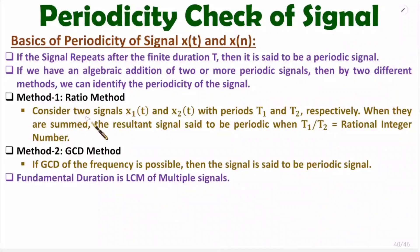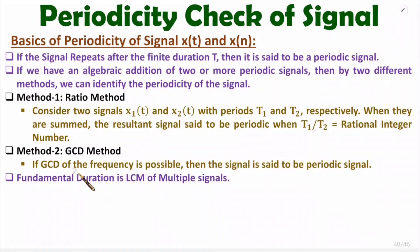Let us consider we have two periodic signals x1(t) and x2(t), where x1(t) has duration T1 and x2(t) has duration T2. Using the ratio method, we take the ratio of T1 by T2, and if this ratio is a rational integer number, then the given signal is periodic. In the GCD method, we identify the GCD of the frequencies f1 and f2. By dividing f1 and f2, if the remainder is zero, then GCD is possible and the given signal is periodic.